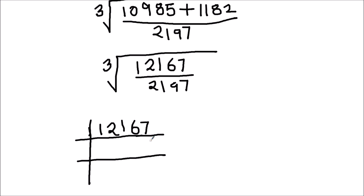For finding the cube root of this number by prime factorization, we use prime numbers to divide the number. We check all prime numbers up to 23, because up to 23 there is no prime number which is a divisor for this number. So 23 is the first prime number which divides 12167 fully. 23 times 5 is 115, then we have a remainder of 6, this becomes 66, and 23 times 2 is 46. There is a remainder of 20, this becomes 207, and 23 times 9 is 207.